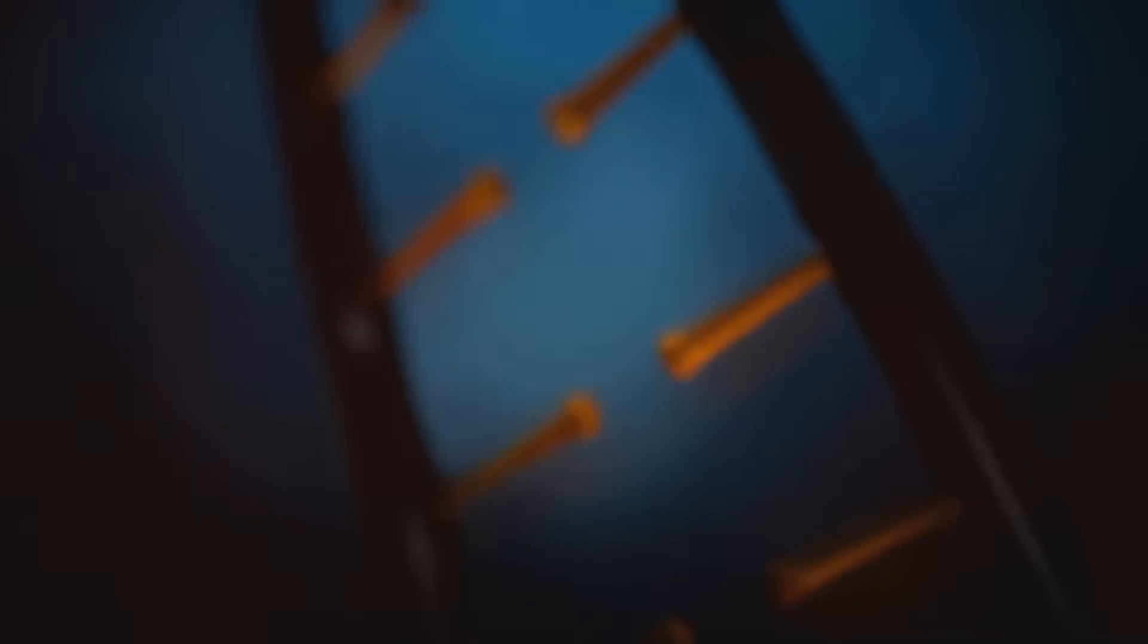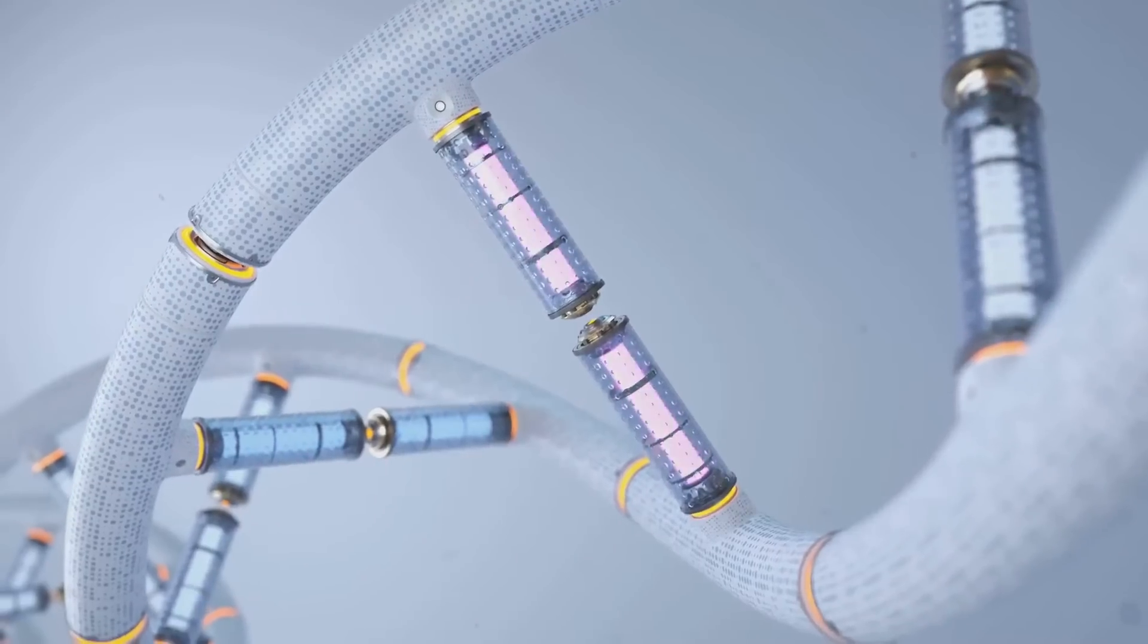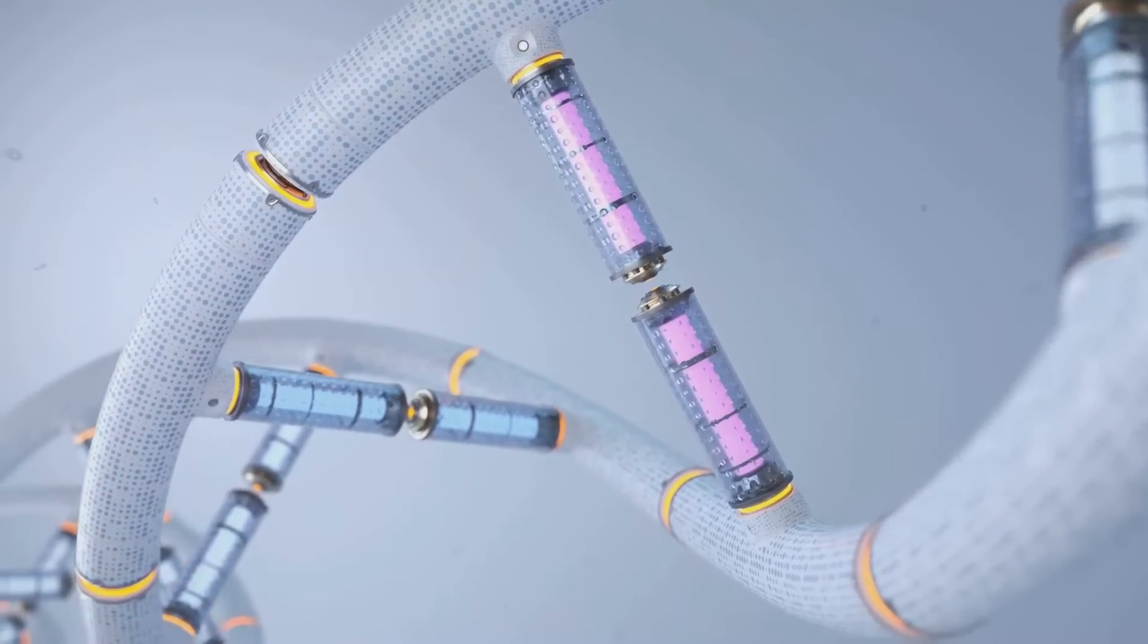The sides of the ladder are made up of sugar and phosphate molecules. The rungs of the ladder are made up of special chemicals called bases.